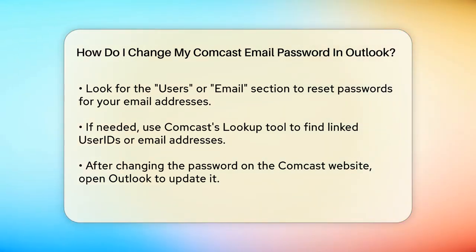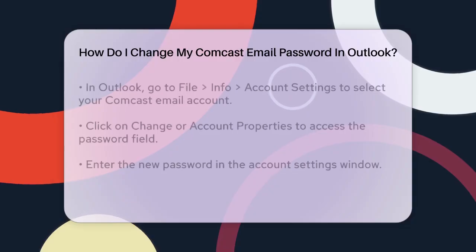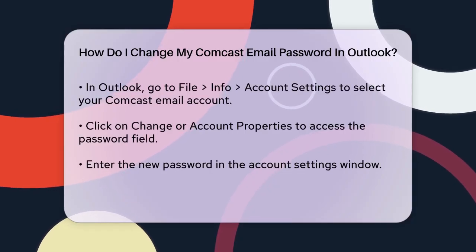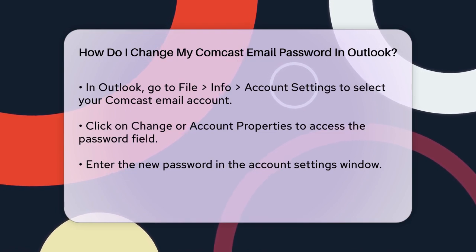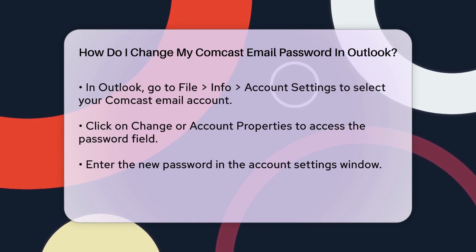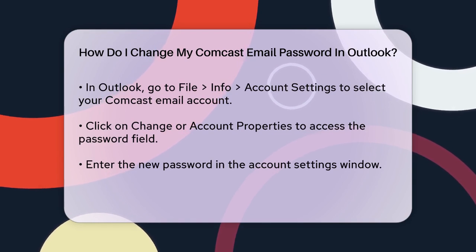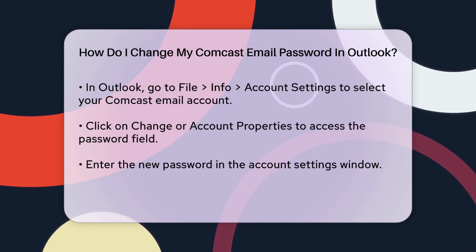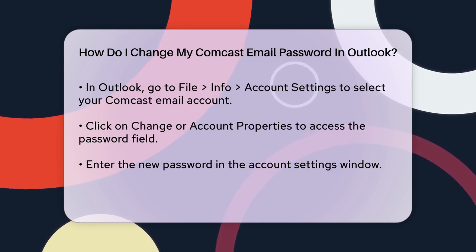After you've changed your password on the Comcast website, you'll need to update the password in Outlook. When you open Outlook, it will prompt you to enter the new password. Here's how you do it: go to File, Info, Account Settings. Select your Comcast email account, and then click on Change or Account Properties. In the Account Settings window, update the password field with your new password.